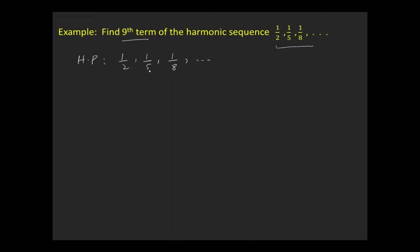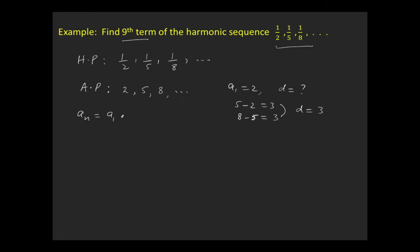First, find the general term of this harmonic sequence. The corresponding arithmetic progression is 2, 5, 8, and so on. The first term a1 = 2 and the common difference d = 3 (subtracting consecutive terms gives 3). The general term of this arithmetic progression is: an = 2 + (n−1)×3 = 3n − 1.